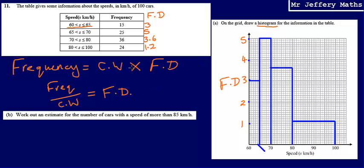And again, just a quick check that you can do. The area of these bars should be equal to the frequency. So here, I've got a class width times the frequency density. So from 60 to 65, 5 multiplied by 3 gives 15. And so that is indeed what the frequency is going to be.